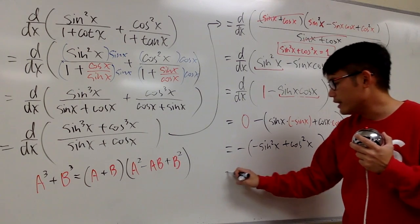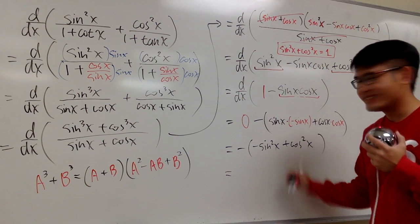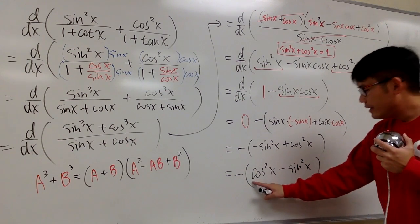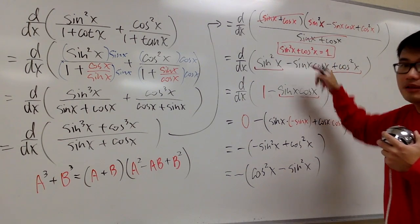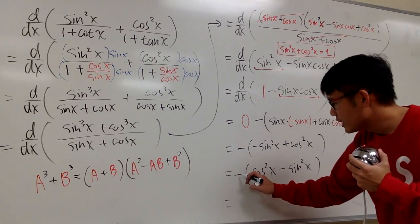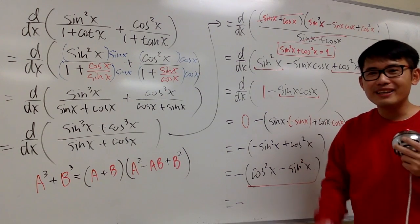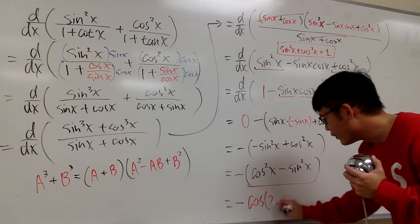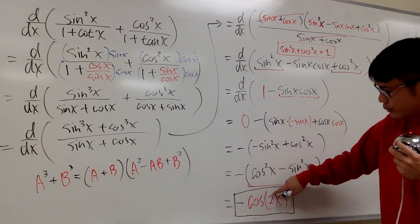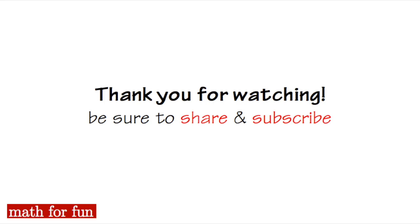We still have the minus in front, and inside we switch the order: cosine squared x minus sine squared x. This is a double angle identity for cosine, so cosine squared x minus sine squared x equals cosine of 2x. Bringing the minus in front, the final answer is negative cosine of 2x. The 2x is inside the function — this is not a power. Fun, huh? Black pen, red pen, yay!